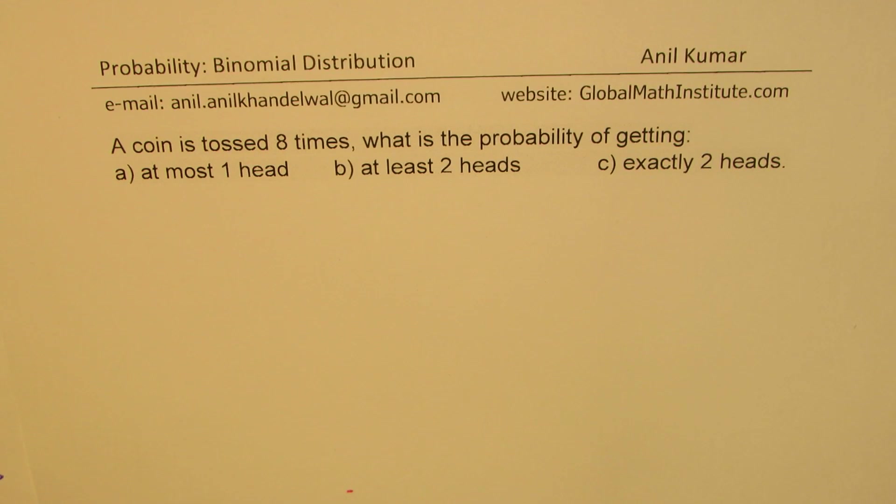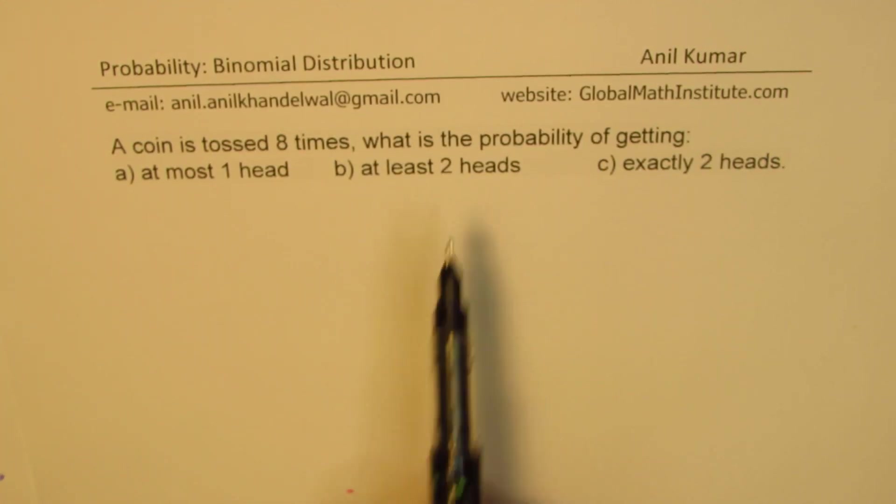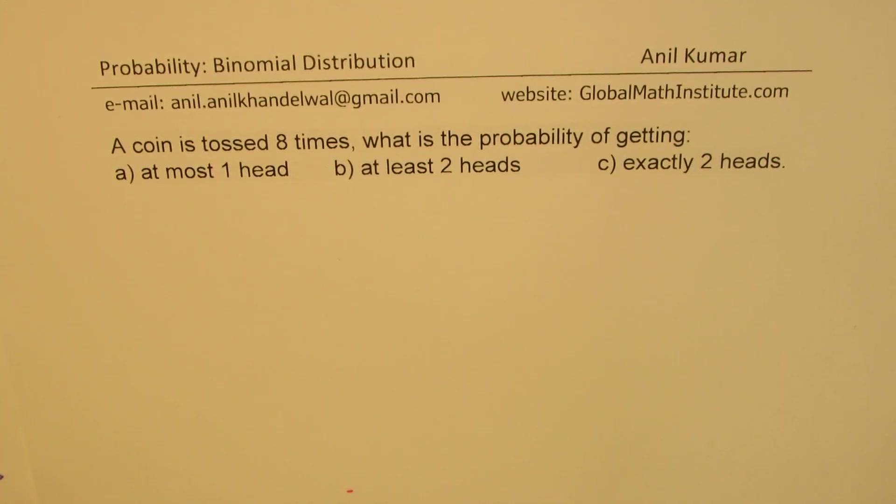The question here is: a coin is tossed eight times, what is the probability of getting at most one head, at least two heads, exactly two heads? A very important question indeed.